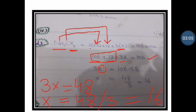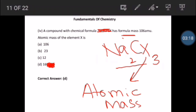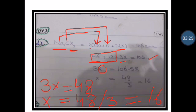Looking at the previous slide, the options available are A: 106, B: 23, C: 12, D: 16. It means option D is the right answer — X equals 16. Take a screenshot of this correct explanation.